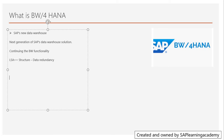Another feature is that we are reducing the number of objects. In the earlier version we used objects like MultiProvider or InfoSet — now we are putting them together into Composite Provider. Earlier we had objects like cube, and we are now putting them into ADSO. So a lot of objects are getting migrated into this version of BW, and this is the future roadmap of SAP.